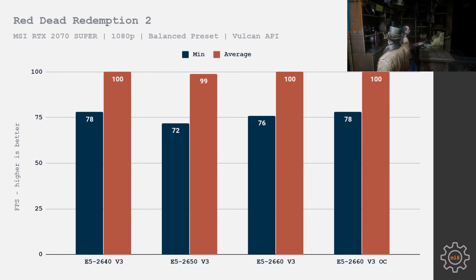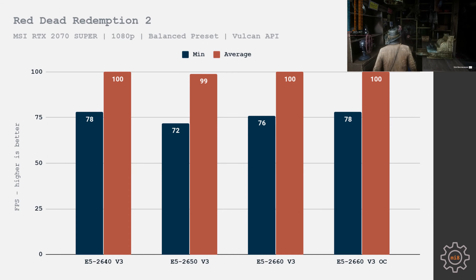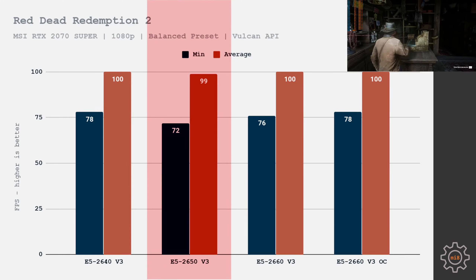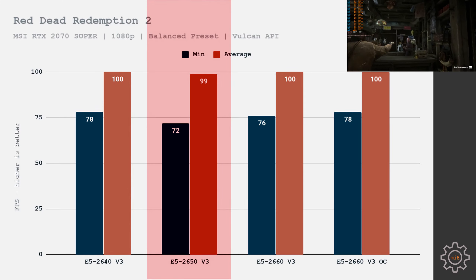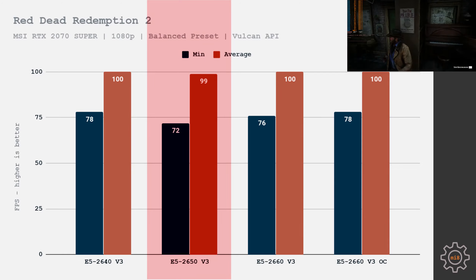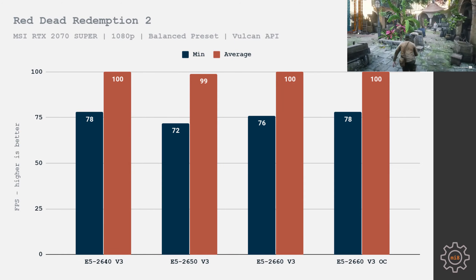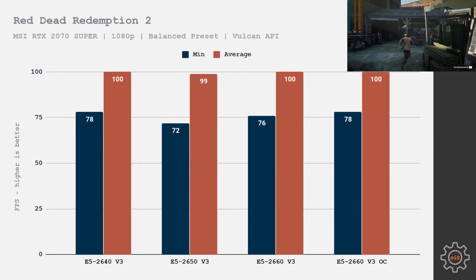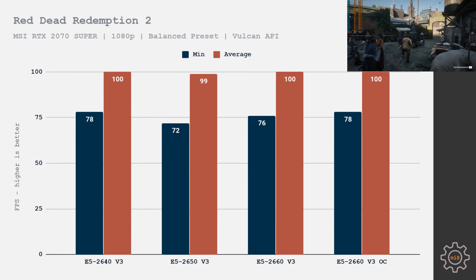Now let's look at some games. First up is Red Dead Redemption 2, tested at 1080p with the balanced preset and Vulkan API. Results are almost identical across all CPUs. The E5 2650 shows the worst result with 72 fps minimum and 99 fps average, while all other CPUs managed 100 fps average and about 78 fps minimum.